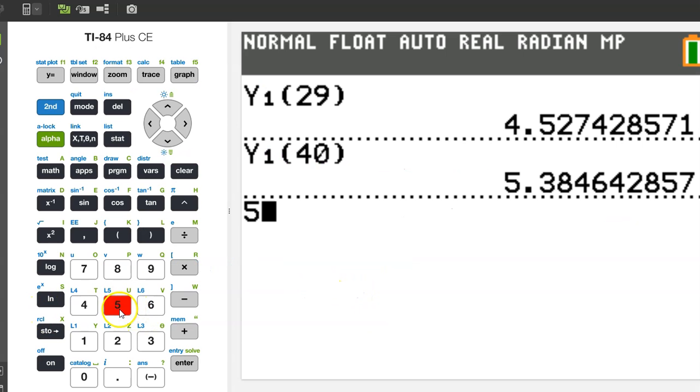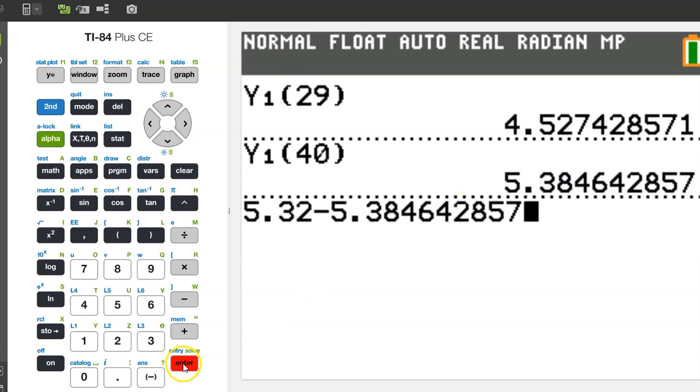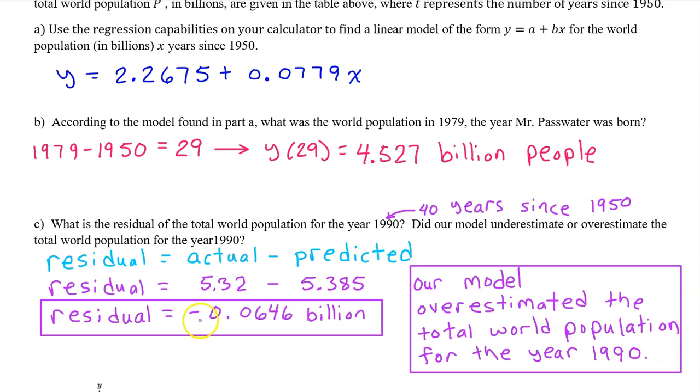Small shortcut, 5.32 minus, I can go up to the answer that I got before and hit enter. That brings it down. Negative 0.0646. So the residual was negative 0.0646 billion, and we see that our model overestimated the total world population for the year 1990. Notice that if you get a negative residual value, it means that your model overestimated. A positive residual value means your model underestimated.